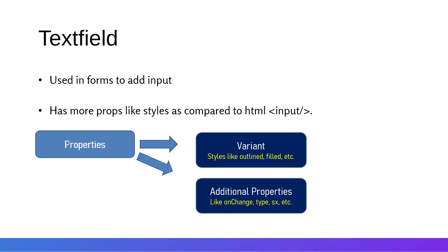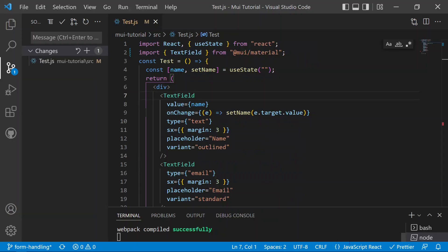In the previous video we learned about text fields in Material UI, how they work, and how to handle the state of a single text field. Now in this video we will handle a form with multiple text fields inside it, so we have three text fields to work with.